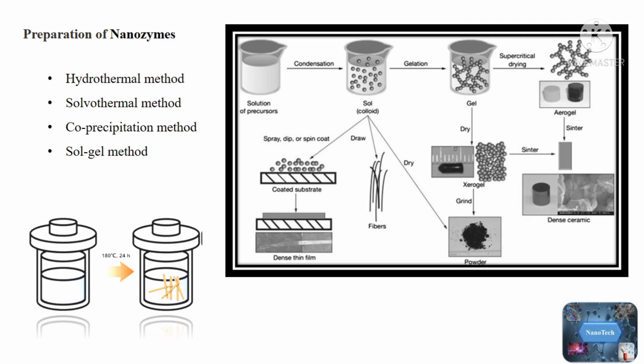The coprecipitation method causes two or more solutes to precipitate from a solution together rather than remaining scattered in it. The ability to prepare pure and homogeneous material is the key benefit of this method. A coprecipitation approach can be used to make nanozymes using many components.